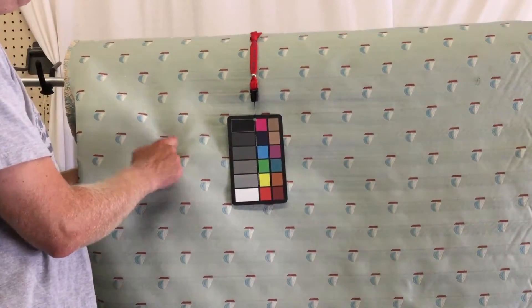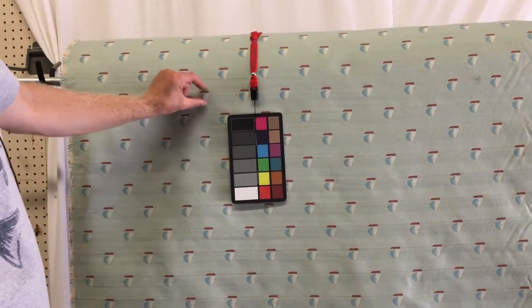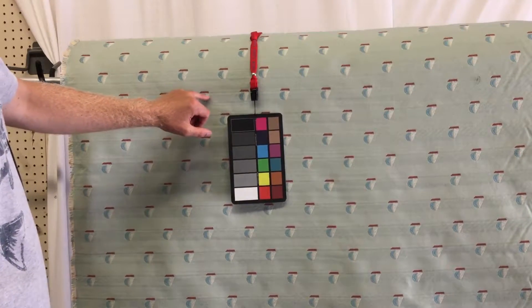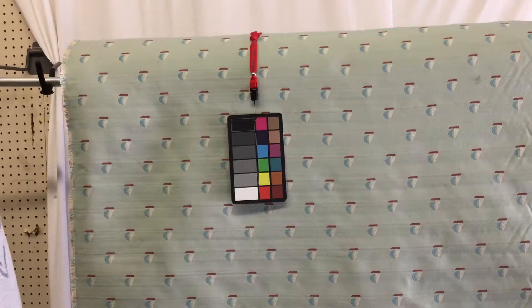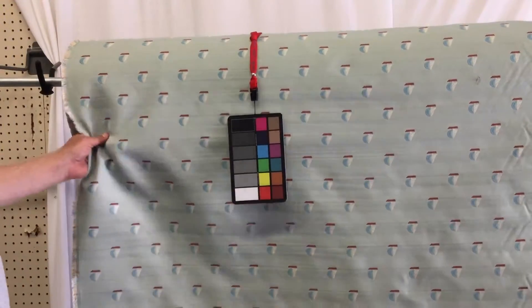The background is kind of a muted mint and the sailboat itself is about an inch tall. It has a blue, a cream, a white, and a red or a rust. It's got a smooth finish. It's very durable. It's 54 inches wide.